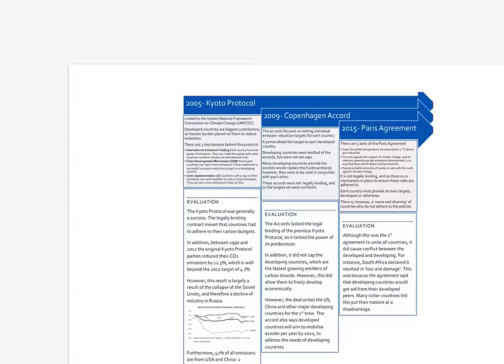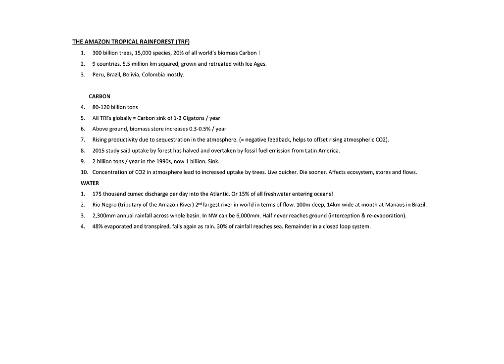The big case study for the carbon cycle is the Amazon rainforest. Key facts: 300 billion trees, 15,000 species, 20% of the world's biomass or carbon, 80 to 100 billion tons of carbon. For water: 175,000 cubic metres discharge per day, accounting for 15% of all fresh water entering the oceans. These facts are useful in introductions.